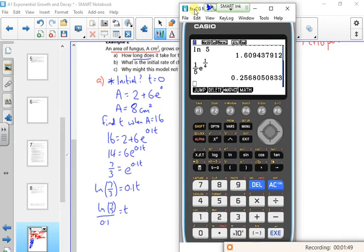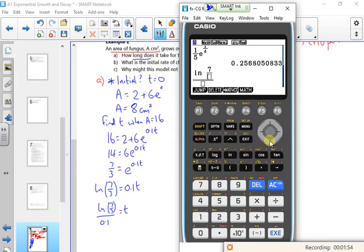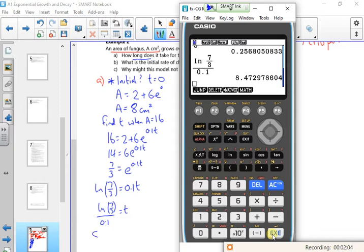So what we got then, so we've got log 7 over 3 over 0.1. I could have just times it by 10, couldn't I? So that gives me 8.47. So 8.47 days is t.